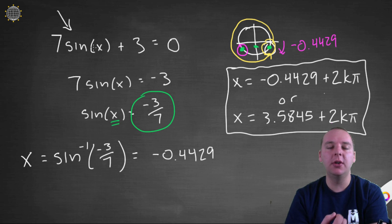And notice that we could not use just our standard unit circle, because negative 3 sevenths wasn't a standard value on our normal unit circle. And we actually required inverse trig functions and the help of a calculator to solve this problem.